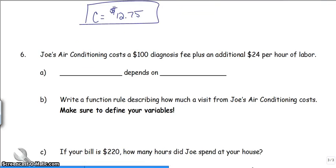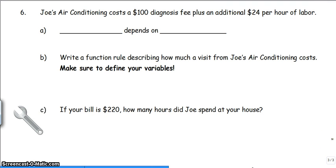Alright, time to look at the last problem here. Joe's Air Conditioning costs a $100 diagnosis fee, plus an additional $24 per hour of labor. So cost. Everything is going to surround cost today. The cost depends on, again it's per hour of labor, so it depends on the number of hours of labor. So how long is Joe working on the air conditioning? That's going to add to my cost.